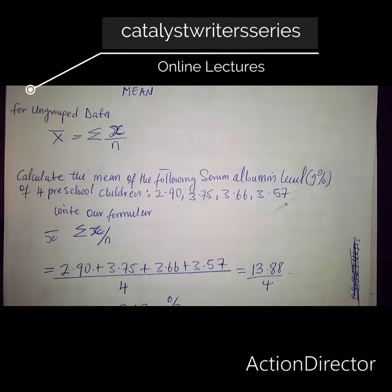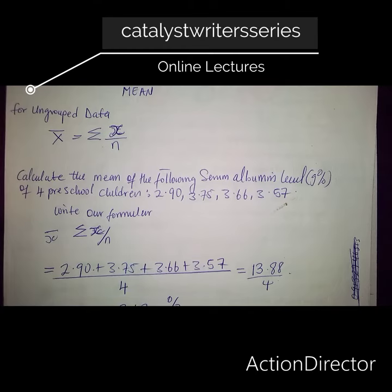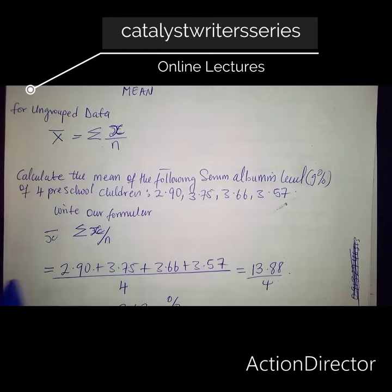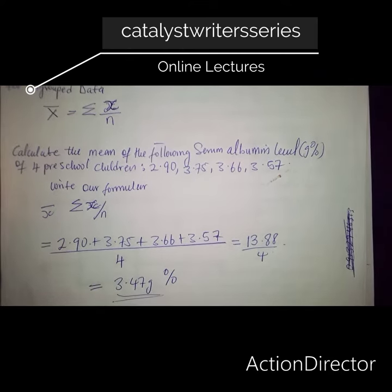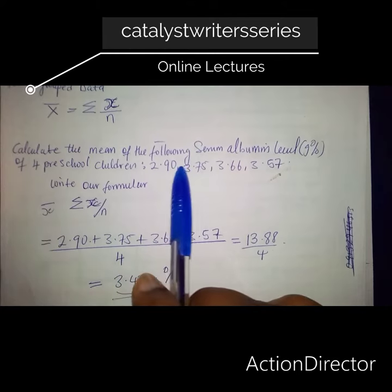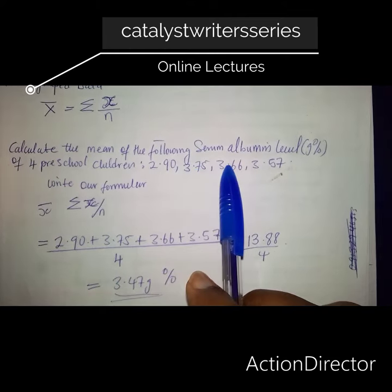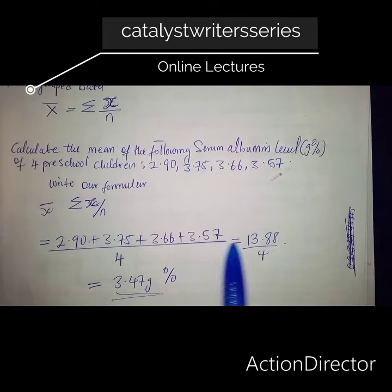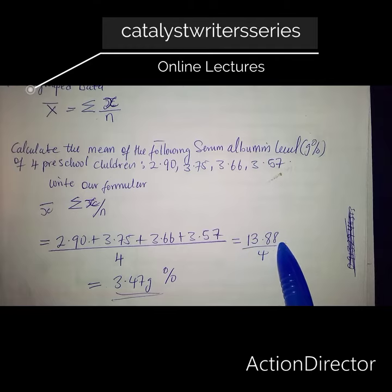What do we do? First of all, we write down our formula: mean equals summation x divided by n. Here, x represents the values we were given and n is the total number of occurrences. We write them down and add them up: 2.90 + 3.75 + 3.66 + 3.57, which gives us 13.88.